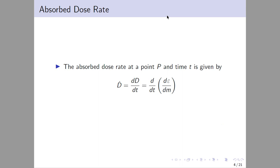The absorbed dose rate describes how fast the molecule absorbs energy, and is equal to Ḋ = dD/dt = d/dt (dε/dm). We can calculate it using this equation.